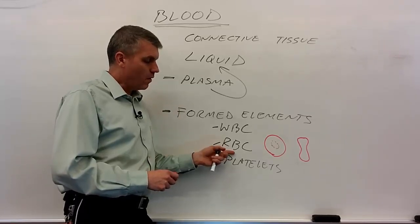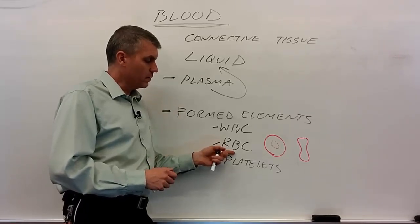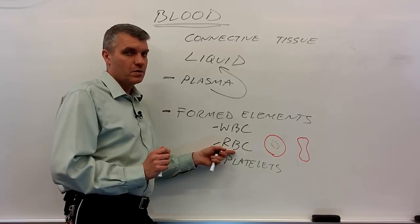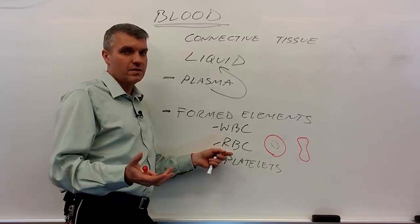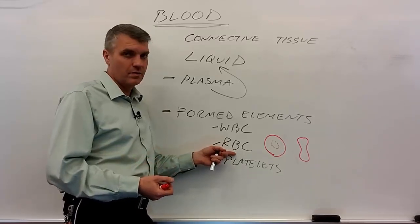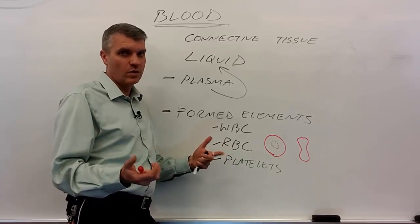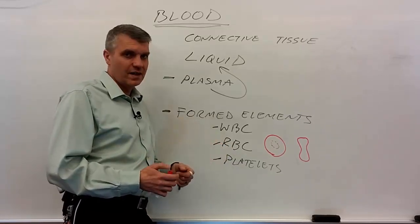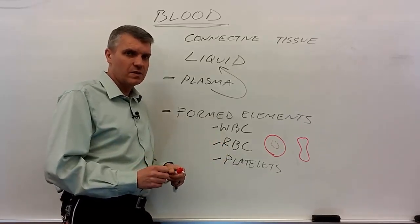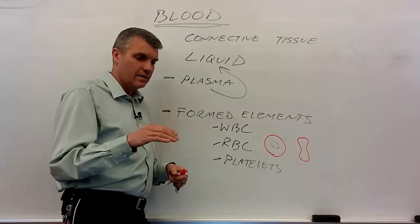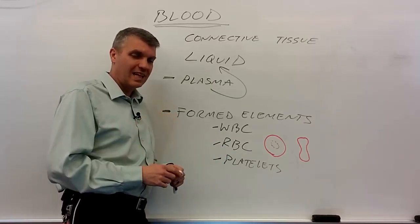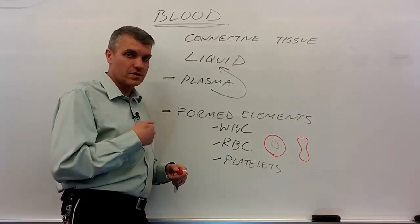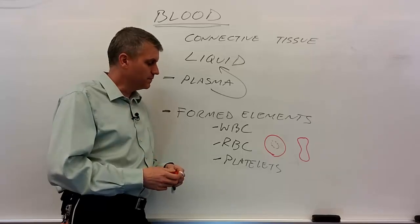Red blood cells are always made in myeloid tissue — all of them. Inside the adult, red blood cells come from red bone marrow, which is why red bone marrow looks red. Red bone marrow is found in the ends of long bones and sandwiched in the center of flat bones such as the sternum and the skull plates.